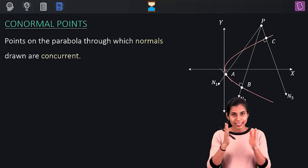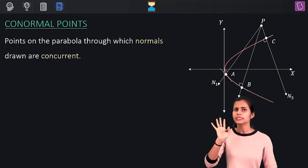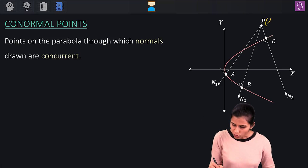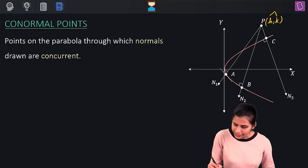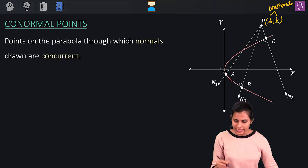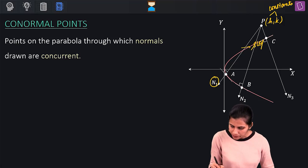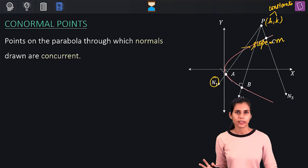Yes, there is. Let's find that out. P is some constant point in the plane with coordinates (h, k), where h and k are simply constants. From point P, let's say I have a normal of slope m being drawn to this parabola.